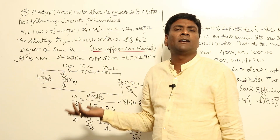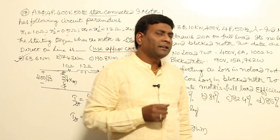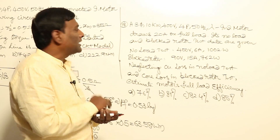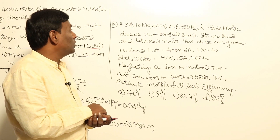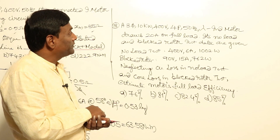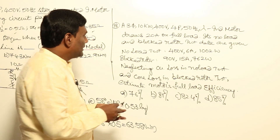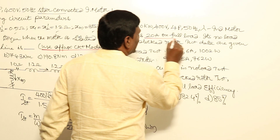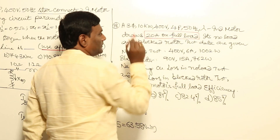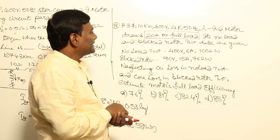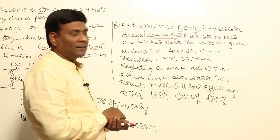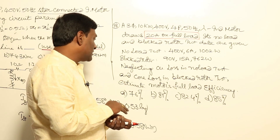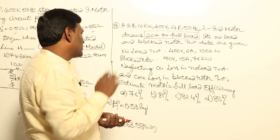So 63.6 Nm is the starting torque when rated voltage is supplied directly — that is the direct-on-line (DOL) starter. Now let us consider a second problem: a three-phase, 10 kW, 400 volts, four-pole, 50 Hz, star-connected induction motor draws 20 amperes on full load. No-load and blocked rotor test data are given. Neglecting copper loss in no-load test and core loss in blocked rotor test, estimate the motor's full load efficiency.